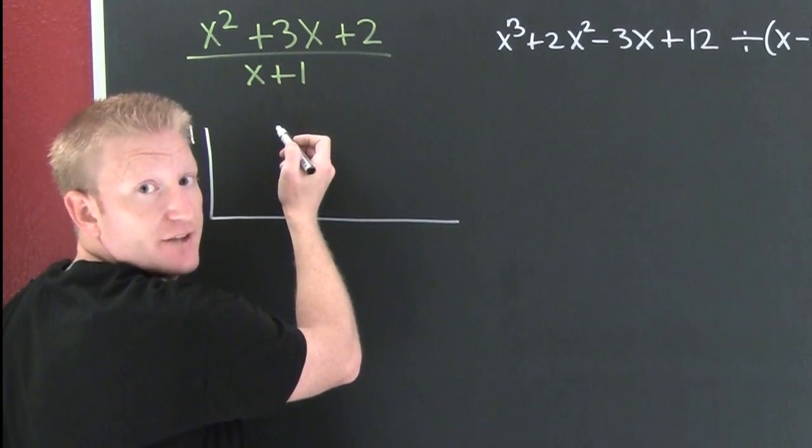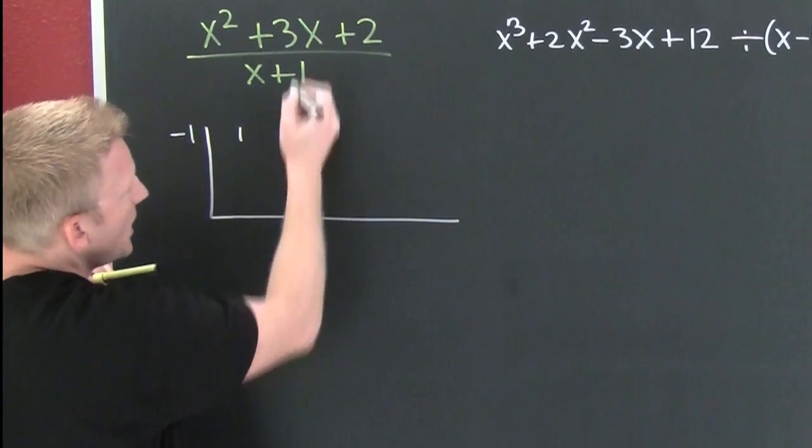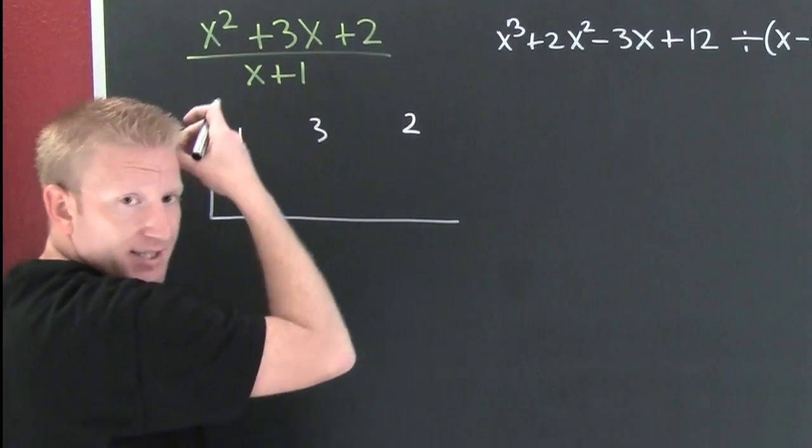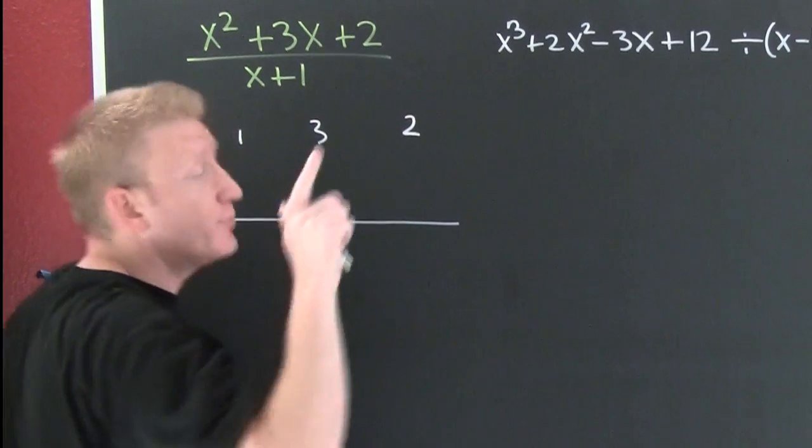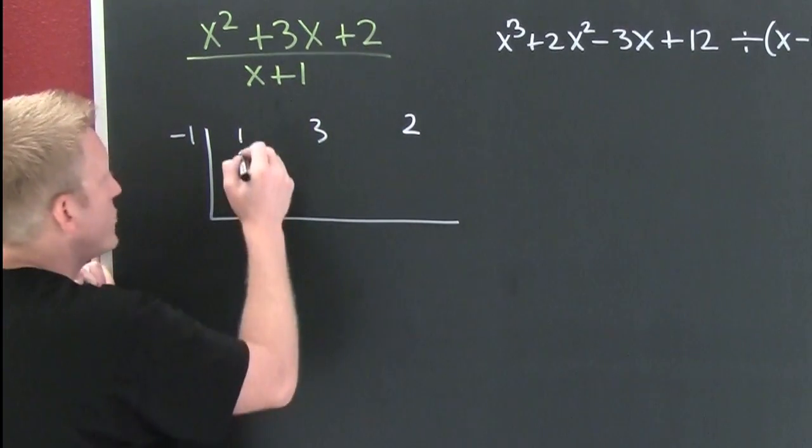Coefficients are the numbers in front of the variables. Here we go. I'm going to put a 1, I'm going to put a 3, and I'm going to put a 2. This is actually long division without the actual coefficients. So then what do I first do? Drop it like it's hot.